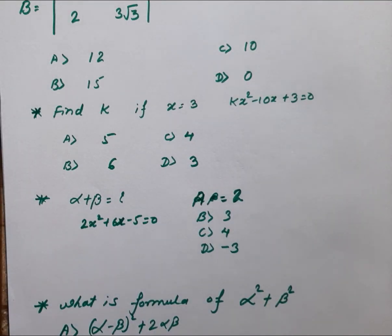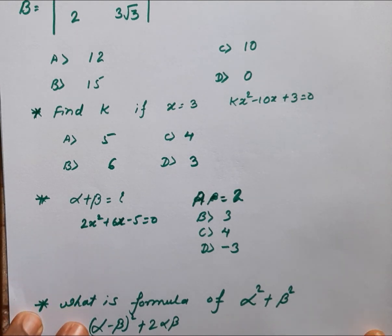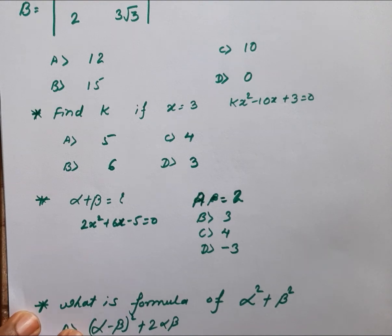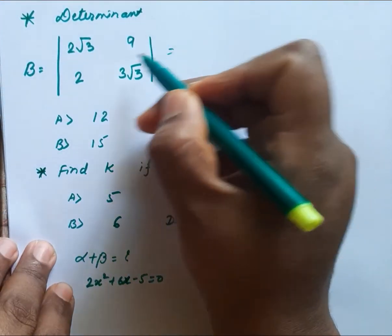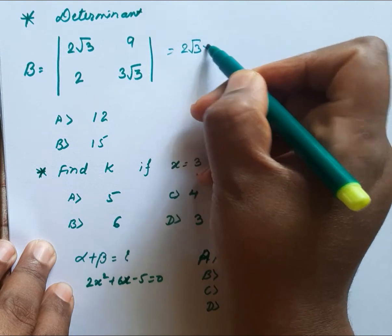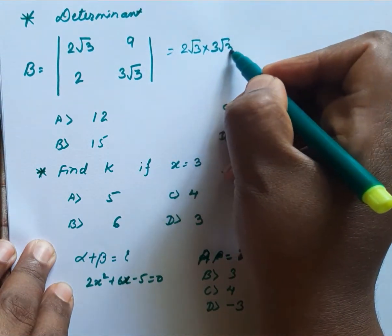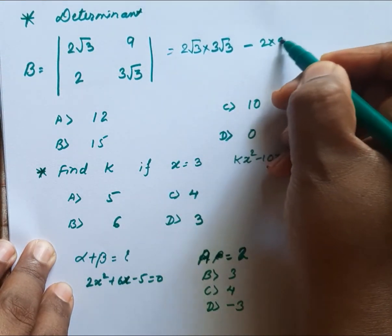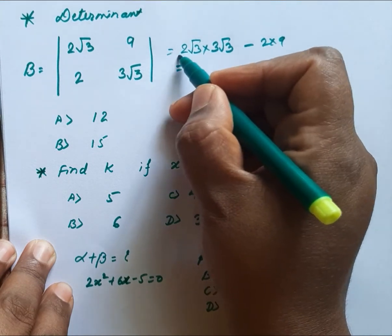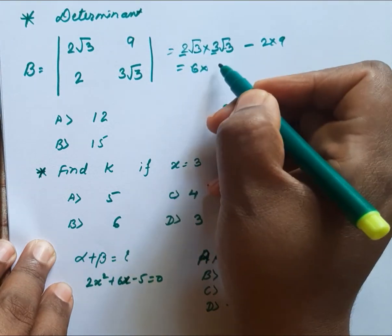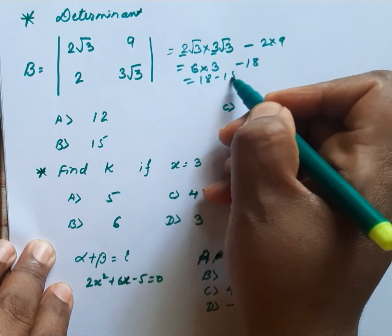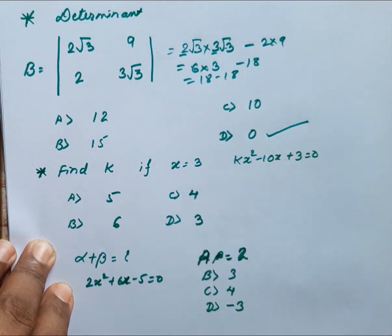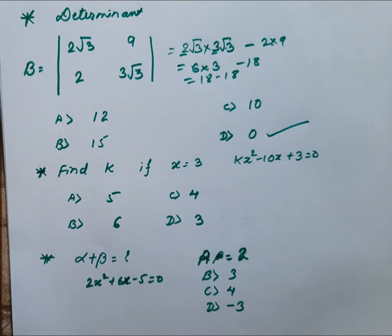Next question: find the determinant of the matrix with entries 2√3, 2, 9, 3√3. Using AD − BC: 2√3 × 3√3 − 2 × 9. That gives 2 × 3 = 6, and √3 × √3 = 3, so 6 × 3 = 18. Then 2 × 9 = 18. So 18 − 18 = 0. The answer is option D.